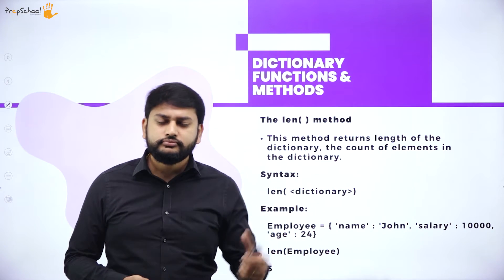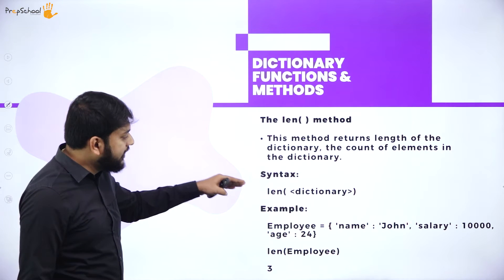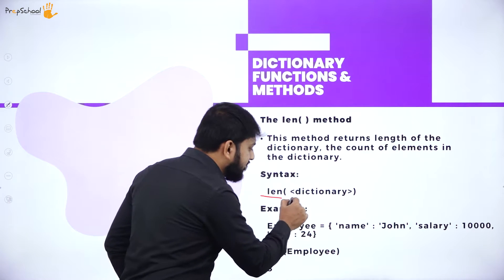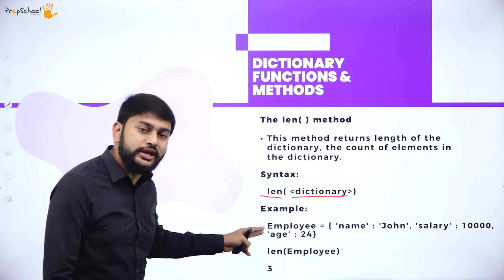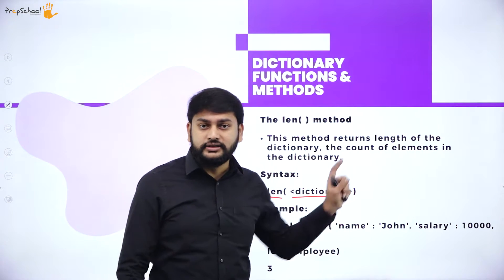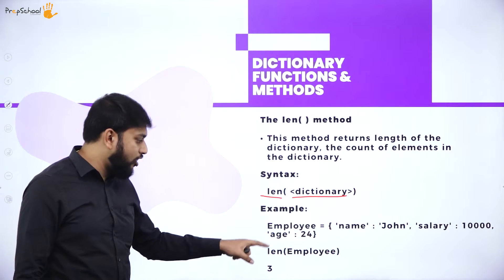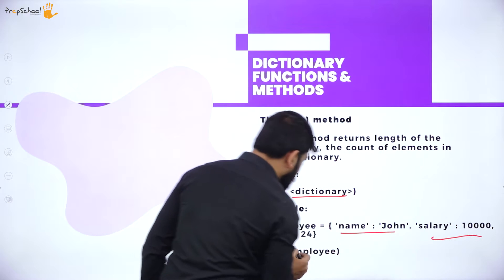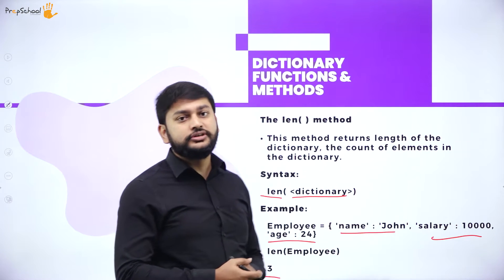The syntax is: len(dictionary_name). For example, if employee has three key-value pairs — name: john, salary: 10000, age: 24 — then len(employee) returns 3. It counts the number of key-value pairs, not individual keys and values separately.